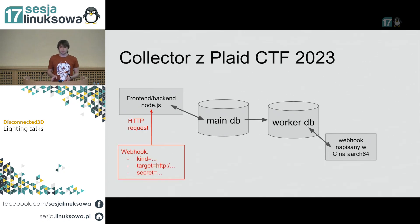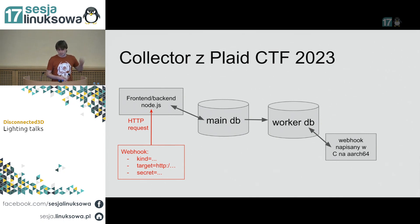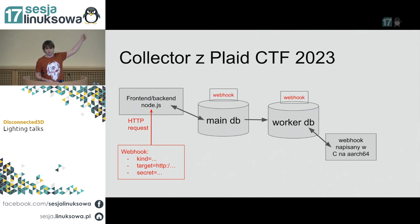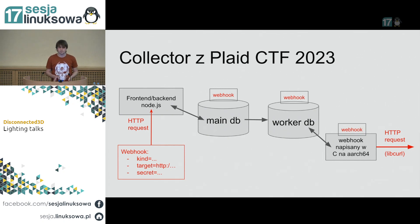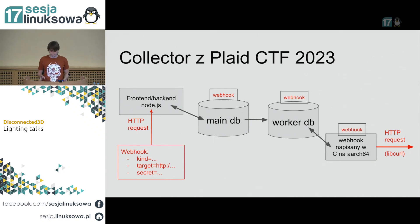Wysyłaliśmy jakiś HTTP request do frontendu z webhookiem, który miał jakiś rodzaj, cel i jakiś secret. To następnie lądowało w głównej bazie, która replikowała do workera, i później webhook to fetchował i wysyłał request pod nasz URL. Naszym celem było wyeksploitowanie tego webhooka – zdobycie kontroli nad aplikacją napisaną w C, a następnie wyciągnięcie flagi z bazy.